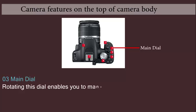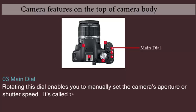Main dial: Rotating this dial enables you to manually set the camera's aperture or shutter speed. It's called the command dial on a Nikon.